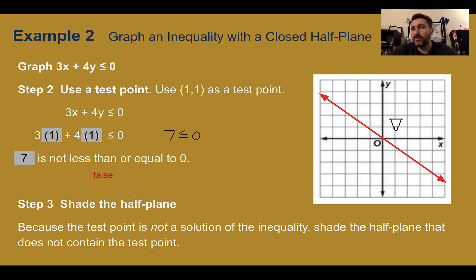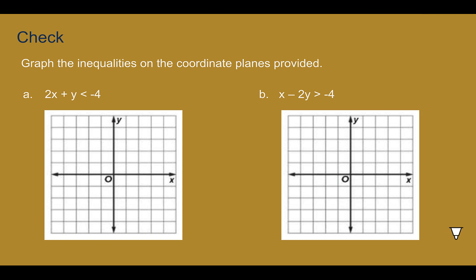Which means, because this point is false, we have to shade on the opposite side. So we're going to color in the opposite side where the point is not located. And again, we are complete. This is what our answer looks like. Check your understanding. Graph the inequalities on the coordinate planes provided. You may use Desmos to help you decide. When you're using Desmos though, please change these to equal so you can graph the line. Then use a test point to practice deciding which side to shade. Pause the video now and complete the check.